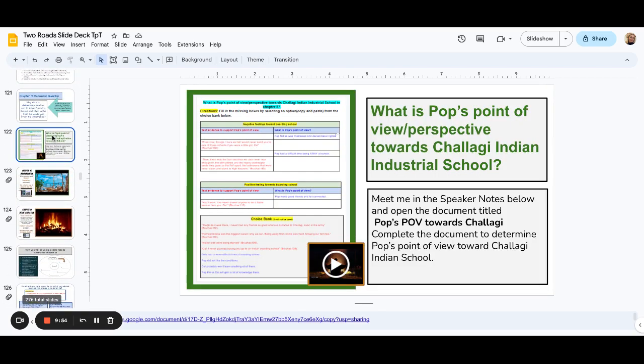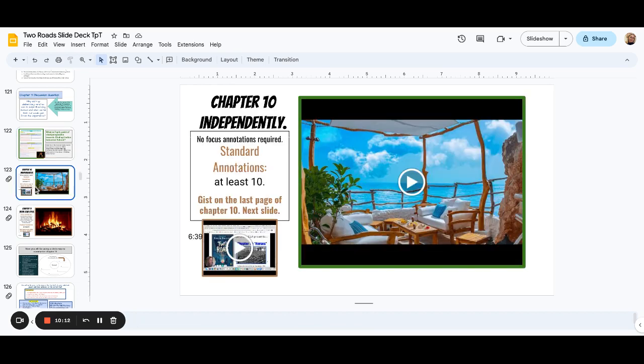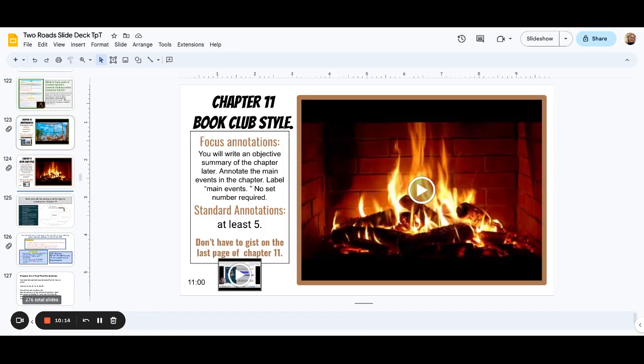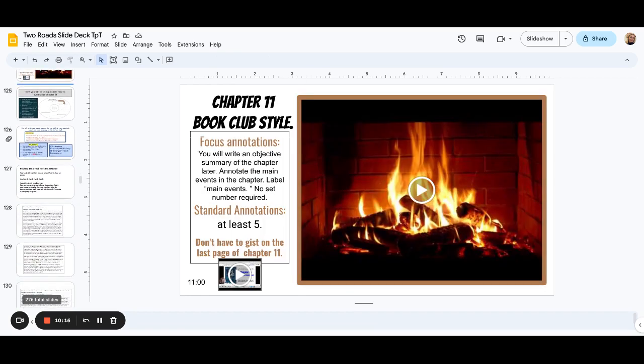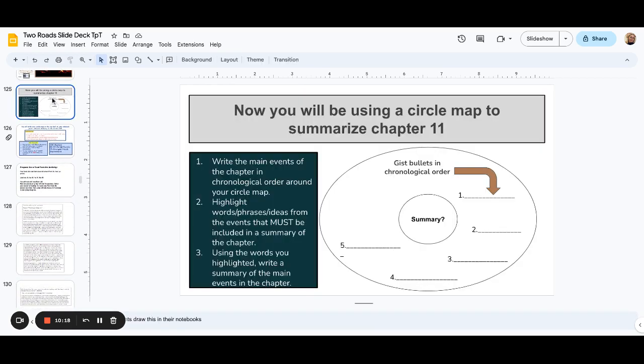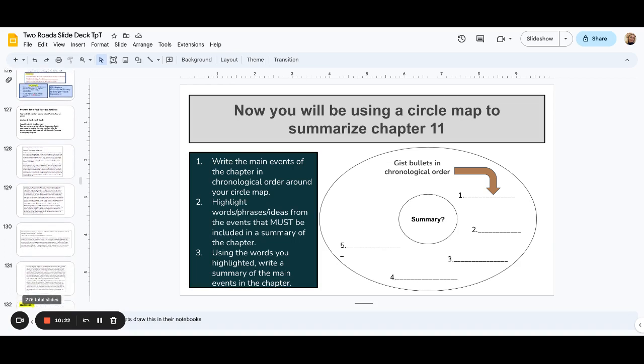Here's a really cool activity. You have access to this document. It's linked below. Pop is the main character's father, and he actually takes his son and drops him off at the Native American boarding school. And so you're trying to get the kids to figure out his point of view towards the school and why he would take his son there. More chapter pages. They're going to write an objective summary. Very step-by-step guide on how to get them to write a summary.